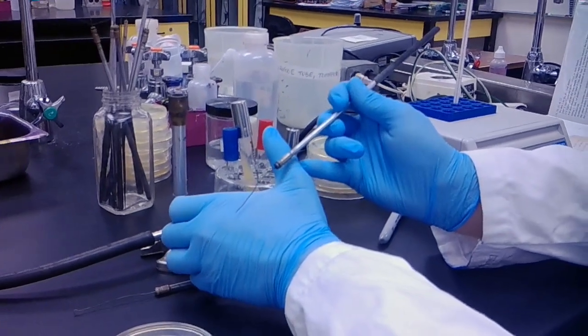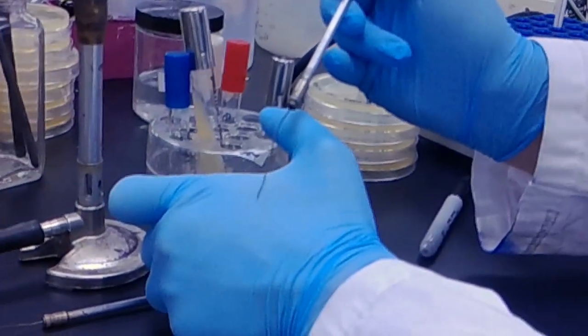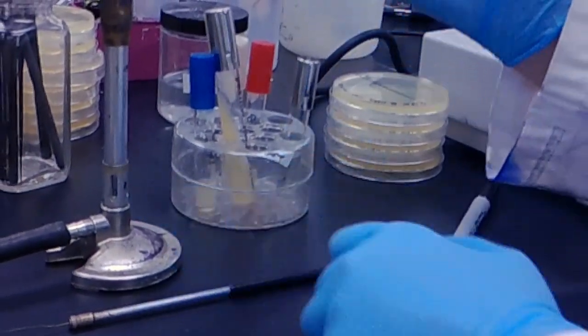As you can see, this doesn't actually have a loop here. This is what I'm going to be using for collecting my bacteria from the slant.